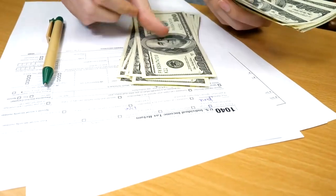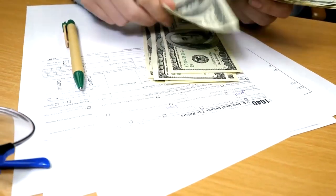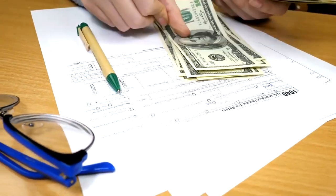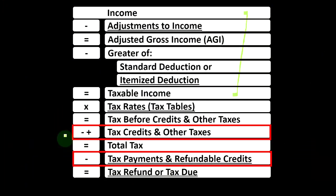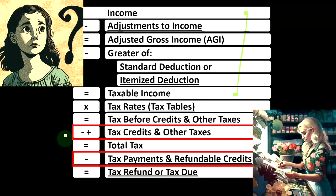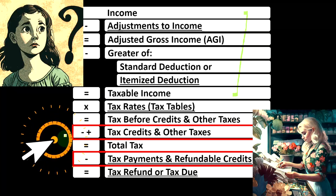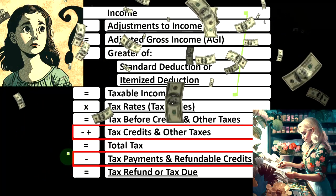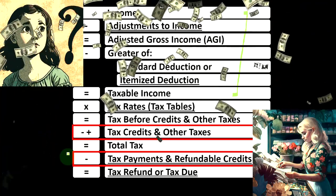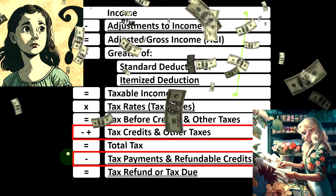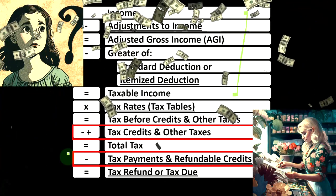Also note that we have two categories of credits: non-refundable credits and refundable credits. That's why we have these two line items down here involving credits. Non-refundable credits don't take the tax liability below zero, because doing so would make it more of a benefit or welfare-type program. But refundable credits do take the liability below zero, effectively using the tax code like a welfare or benefits-type program.